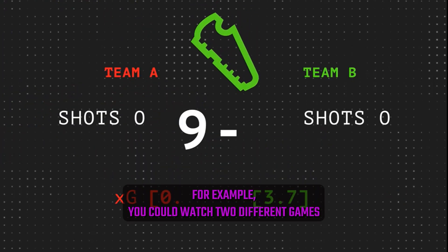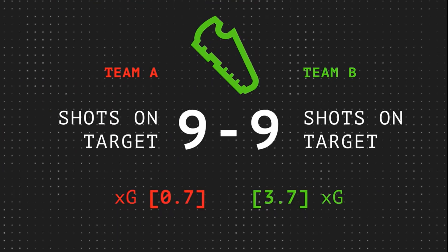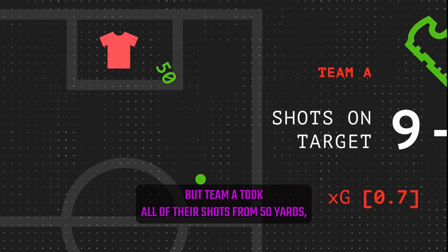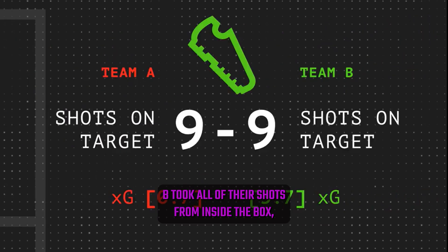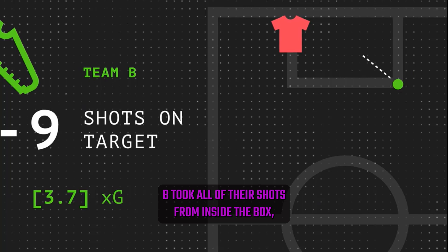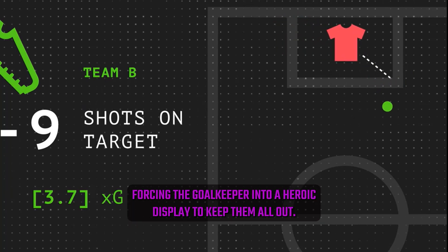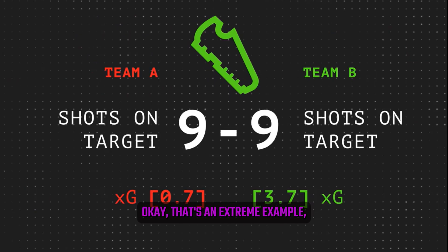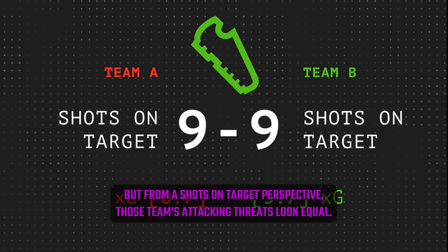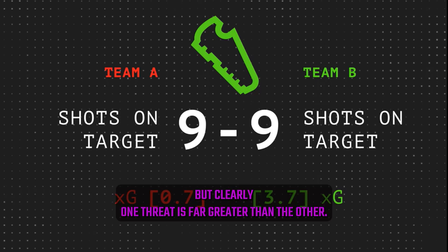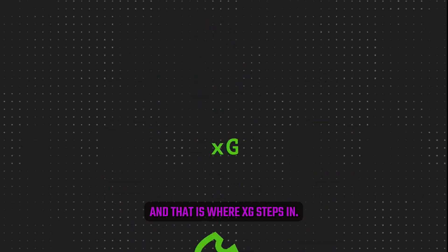For example, you could watch two different games where a team registers nine shots on target in each. But team A took all of their shots from 50 yards, dropping them easily into the goalkeeper's arms, whereas team B took all of their shots from inside the box, forcing the goalkeeper into a heroic display to keep them all out. That's an extreme example, but from a shots-on-target perspective, those teams' attacking threats look equal — yet clearly one threat is far greater than the other, and that is where XG steps in.